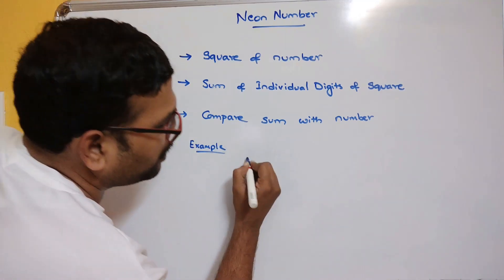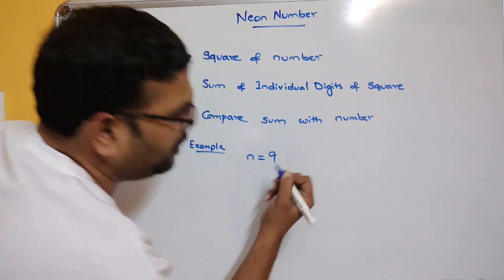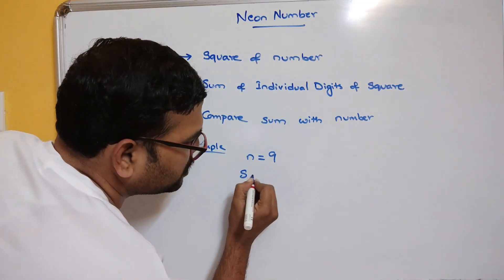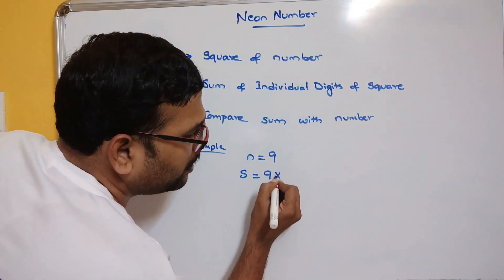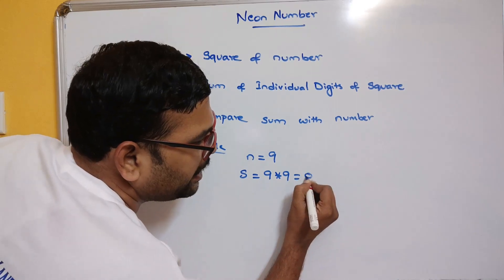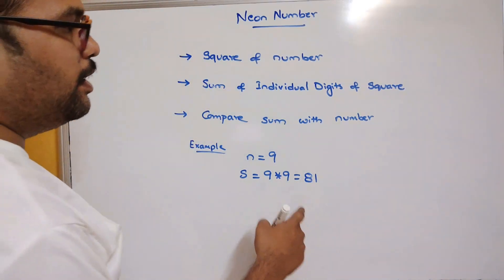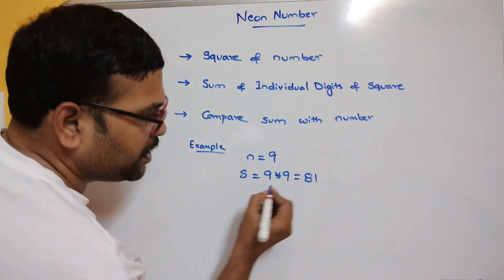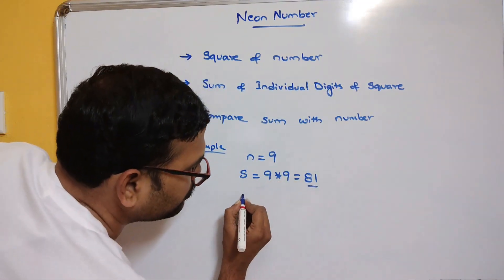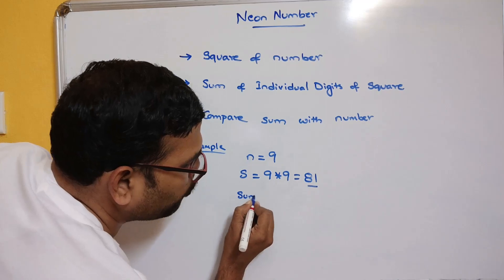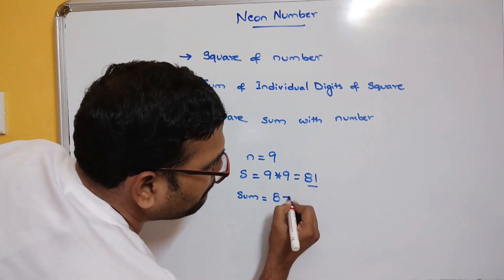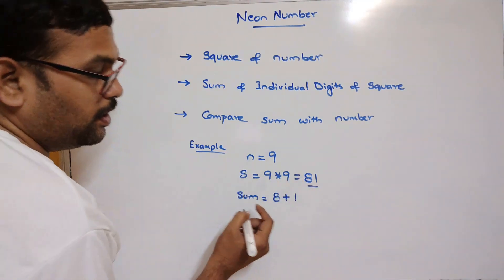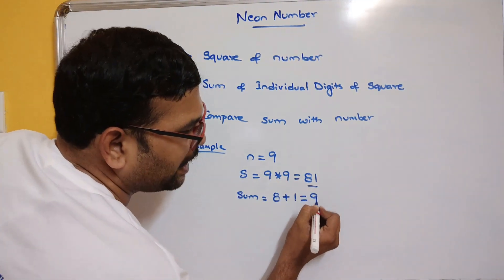If both are equal, we can say it is a neon number. For example, take the number n as 9. First we find the square: s = 9 × 9 = 81. Next, we find the sum of individual digits of that square — the individual digits are 8 and 1.